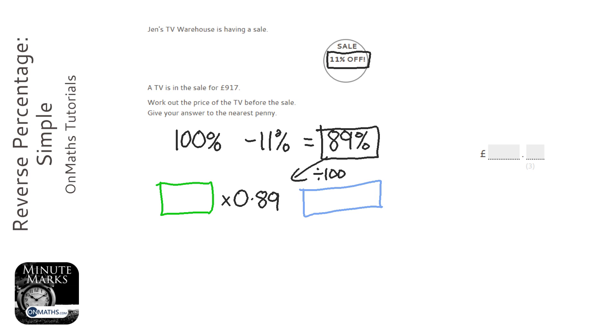But the difference with this question is we're not working this way. We're working this way. So if you have a look at the question it says the sale price is £917. Work out the price of the TV before the sale. So the end price is £917. So instead of timesing it by 0.89, when we're working the other way, we divide it by 0.89.